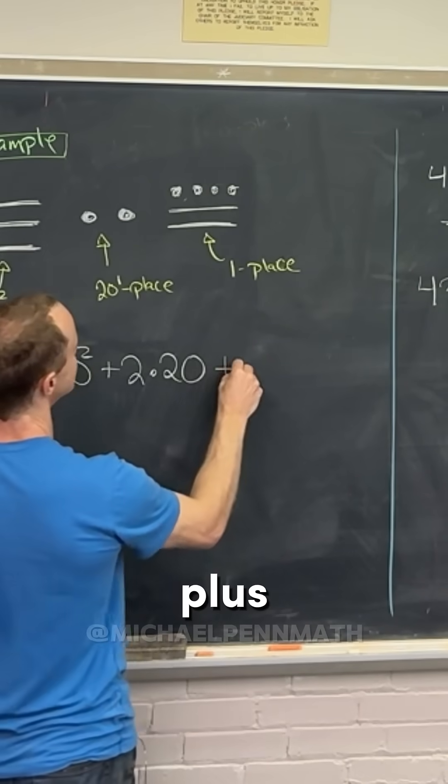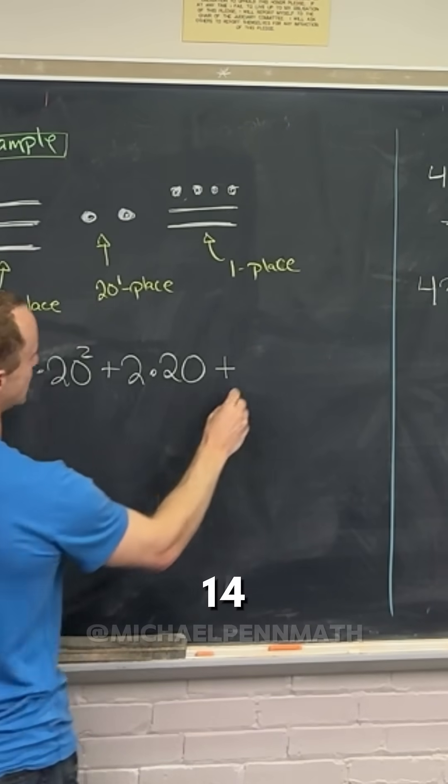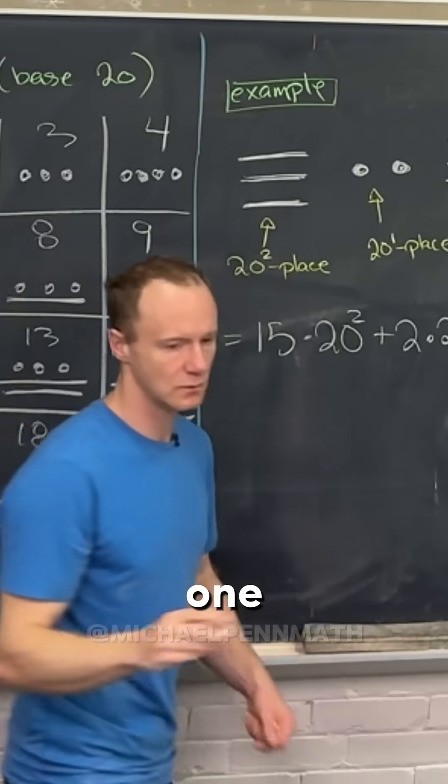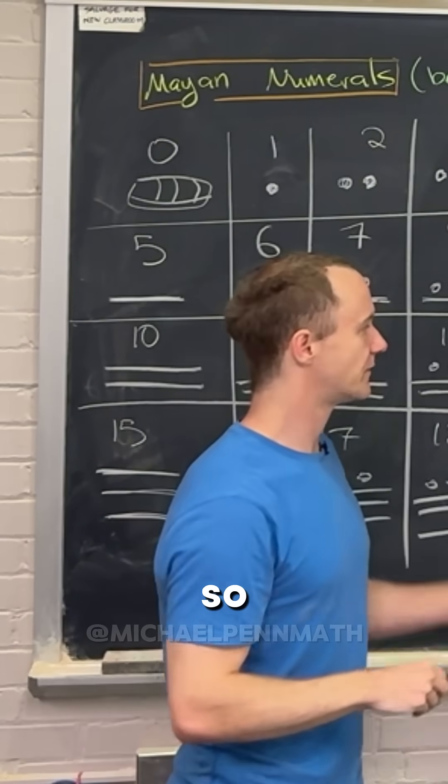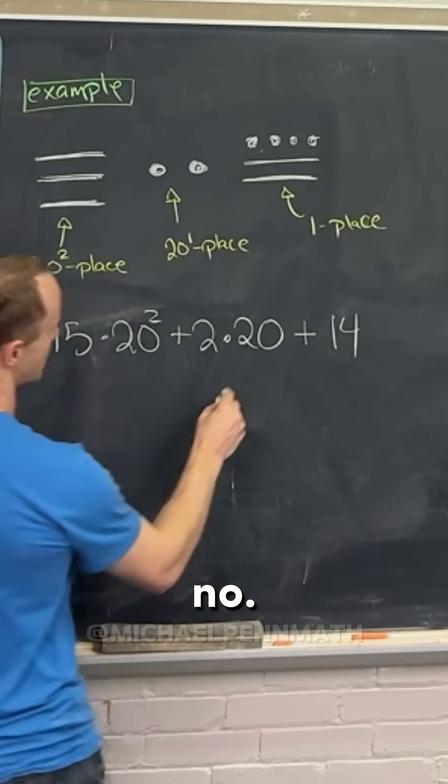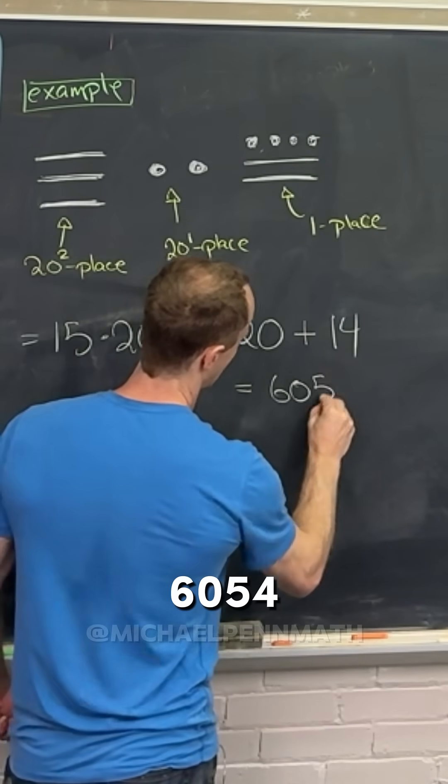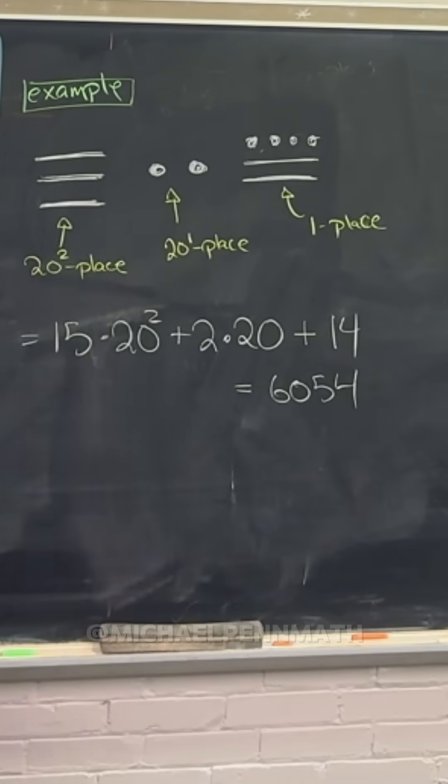And then finally, plus 14 times 1, because it's in the ones position. So if you add all that up, you get the number 6054.